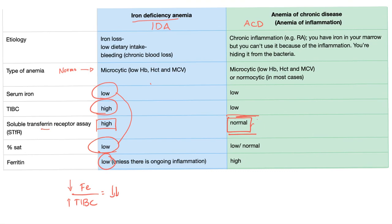In anemia of chronic disease, we're trying to hide the iron away from the inflammation or from the bacteria, so the serum iron will be low. Where do we hide it? In storage units and the macrophages. So ferritin will be high. TIBC is always opposite to ferritin, so when ferritin is high, TIBC is low.